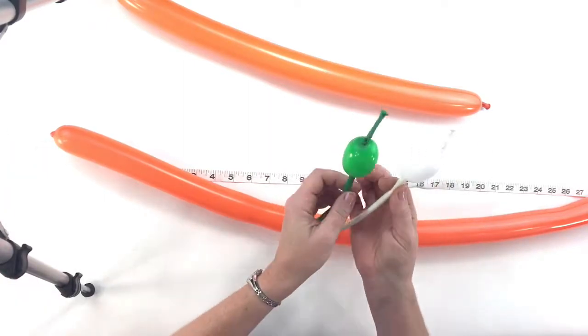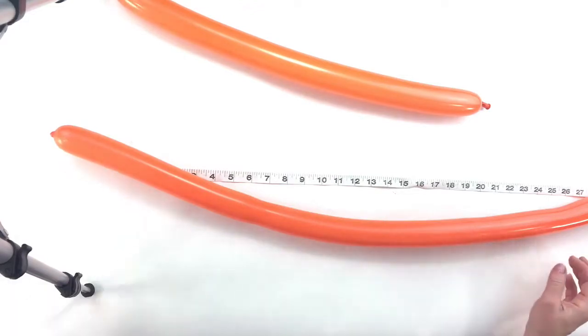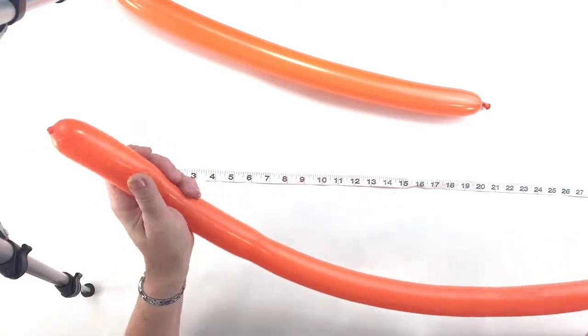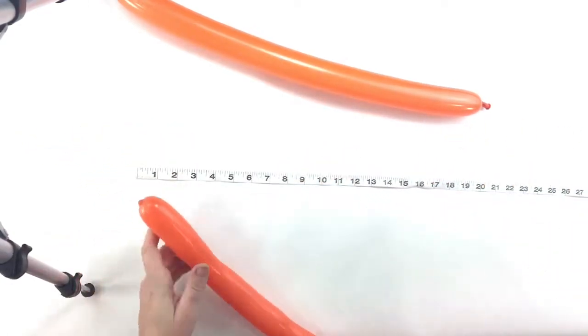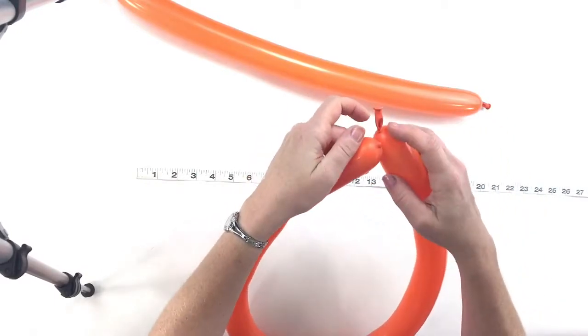So one spring green, one white 260, and two orange 260s. To get started we're going to inflate an orange 260 the whole entire way but let a nice puff of air out of it because we're going to start to make a six petal flower. So you want to tie these ends together.